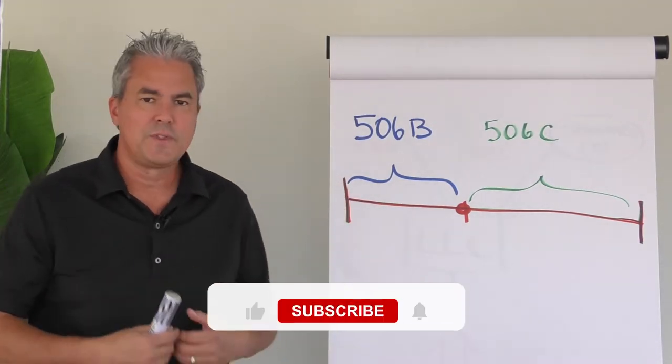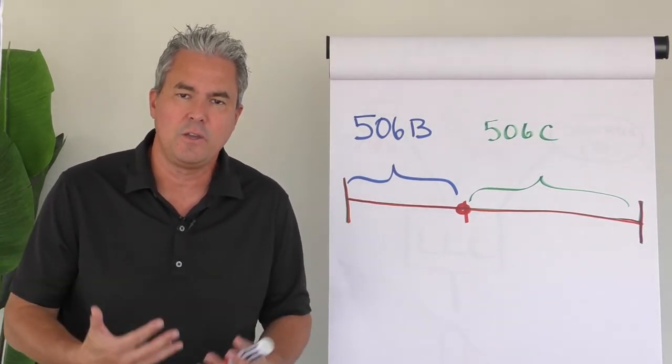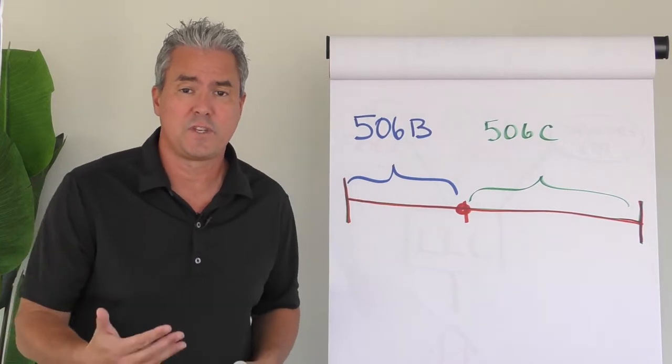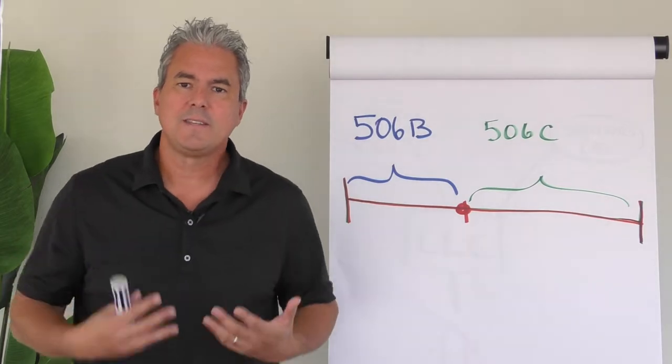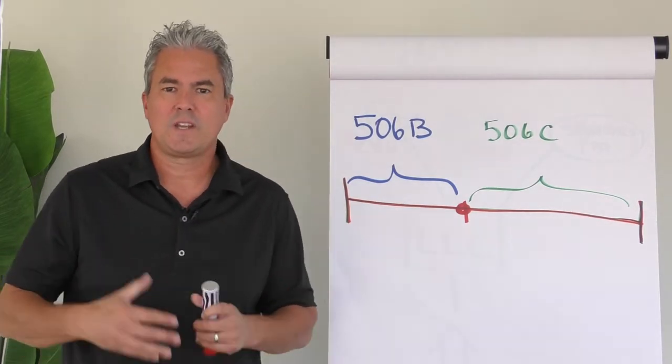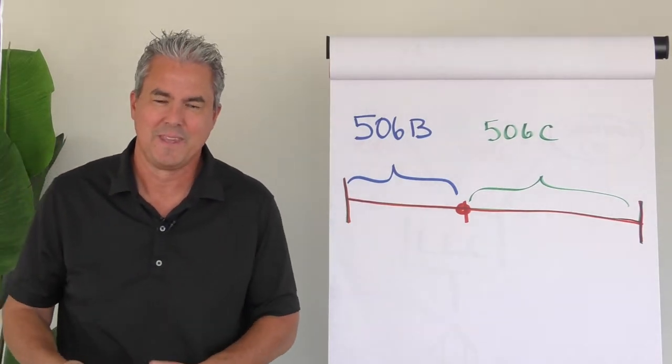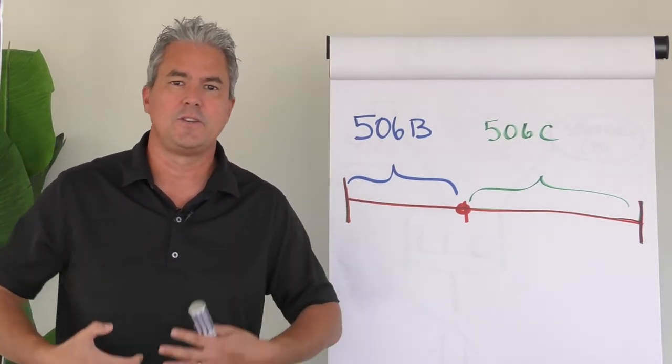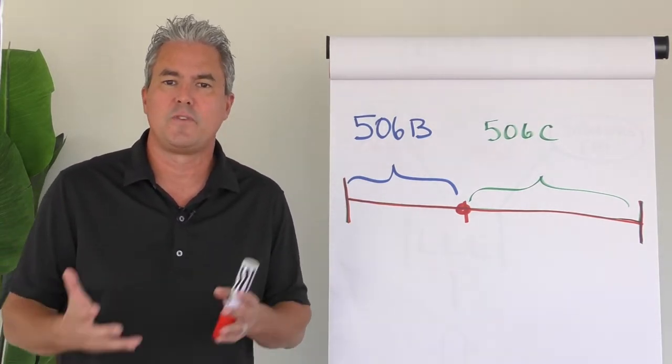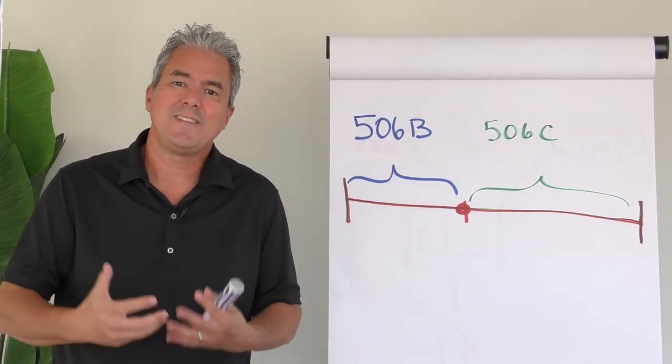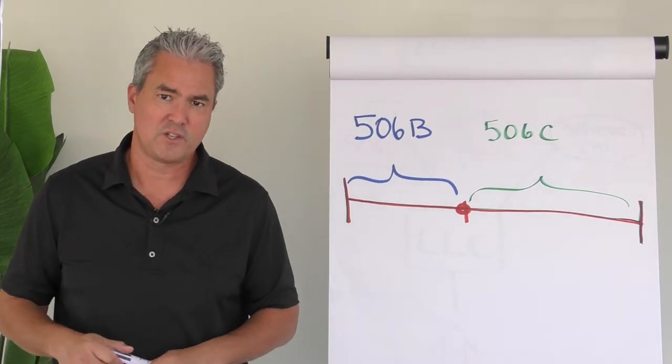But about 18 months ago, we were provided with this gift where syndicators can now literally start a syndication using 506B, just like they do today, but at some point during that raise, make the decision to pivot, to actually terminate or stop that 506B and turn it into a 506C. Now obviously you can see that if you've started a raise and you're falling short, you're having a hard time raising the capital from the people already in your network, having this option of pivoting is actually pretty attractive so that you can get your raise over the finish line.